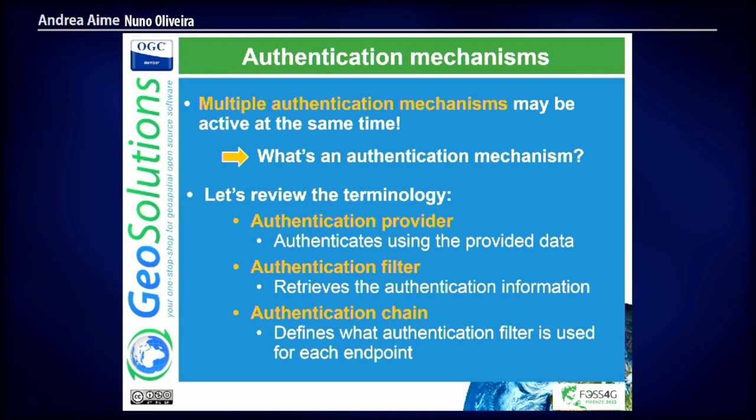There are basically three steps. The authentication provider is a component that receives something and is able to say it got this information and authenticate that the person doing this request is indeed who they claim. The authentication filter defines how I extract the information from the incoming request — does it come in an HTTP header? As form information? From somewhere else? Then we have the authentication chain, because GeoServer has a lot of services and endpoints, and not all endpoints support the same type of authentication. For example, the web administration uses form authentication, but a WMS request uses basic authentication.